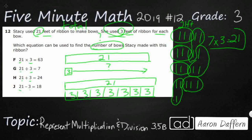But take a look right here. 7 times 3. So we know that she made 7 bows. But 7 times 3 equals 21 is not one of my options. I do have a multiplication, but it looks like 21 times 3, and that's going to give me 63.